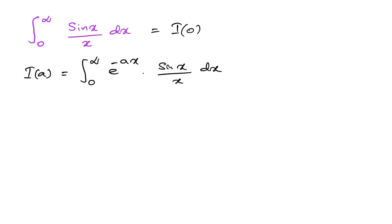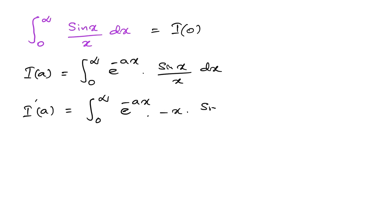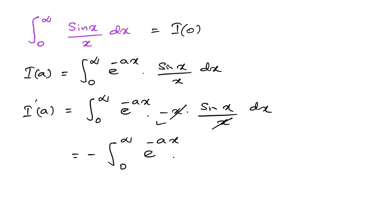According to the Feynman technique, we differentiate with respect to a. So I'(a) is equal to the integral from 0 to infinity, where we differentiate e^(−ax) with respect to a, giving −x by the chain rule. So we have −x times sin(x) over x dx. The x cancels, leaving minus the integral from 0 to infinity of e^(−ax) times sin(x) dx.